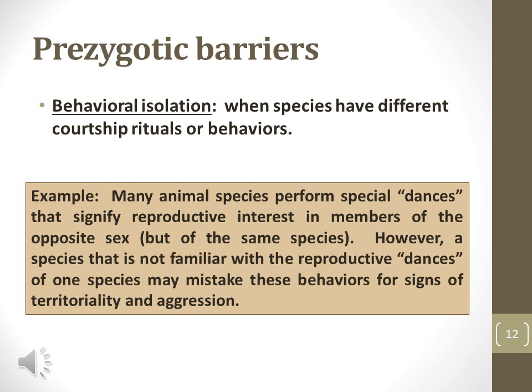A third type of prezygotic barrier is behavioral isolation. Behavioral isolation occurs when populations exhibit different reproductive behaviors. This example discusses special dances that signify reproductive interest in members of the opposite sex, but of the same species. However, if a species is not familiar with the reproductive dance of another species, it may mistake these behaviors as aggression, for example.